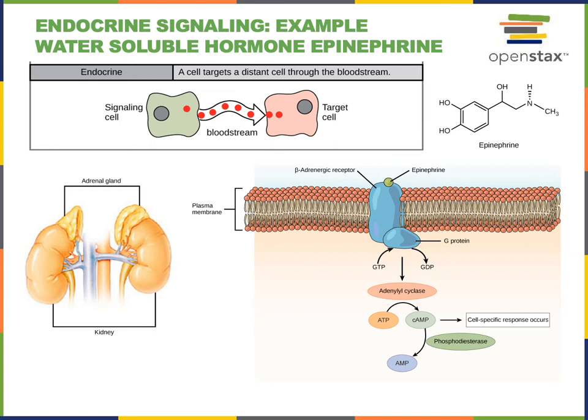One example of a cellular response to stress stimulated by epinephrine is the breakdown of glycogen. Glycogen is a polysaccharide that functions as a storage form of carbohydrate. When epinephrine stimulates the breakdown of glycogen, glucose is produced and released into the blood, and then that glucose can be broken down by cells throughout the body to help them cope with the stressful situation.